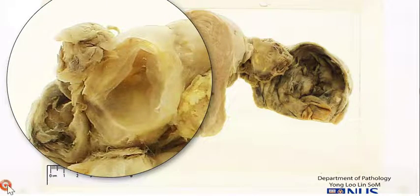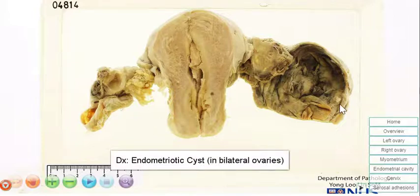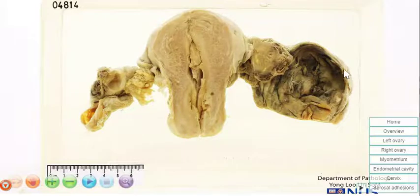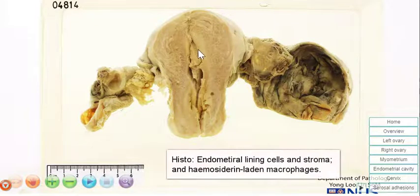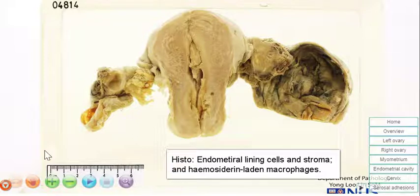So the diagnosis here is endometriotic cyst. On histology, what we would see would be the lining which appears similar to the uterine endometrial lining. We'll also see evidence of previous hemorrhage in the form of hemosiderin-laden macrophages.